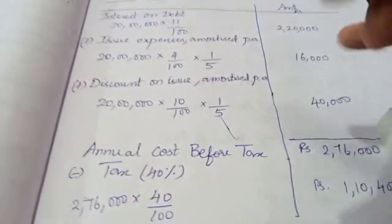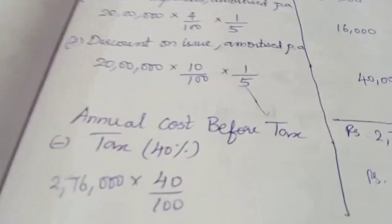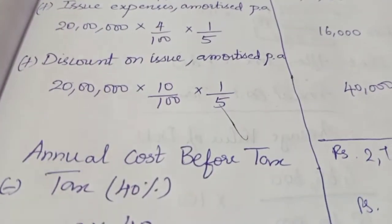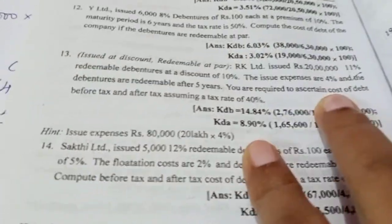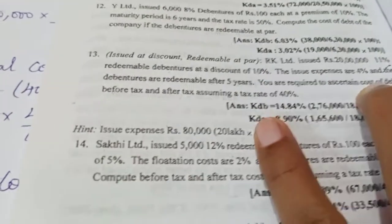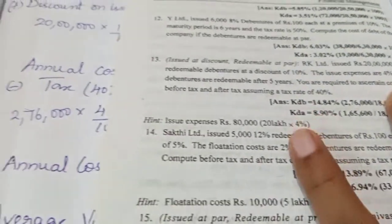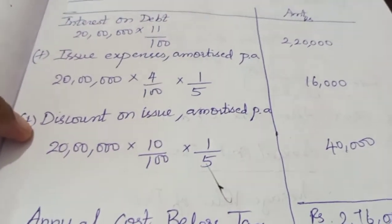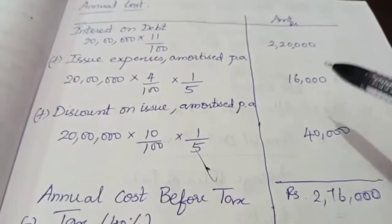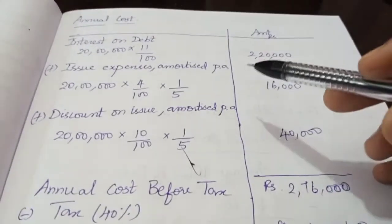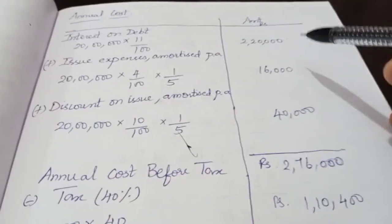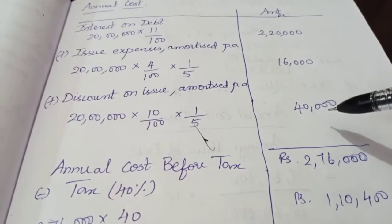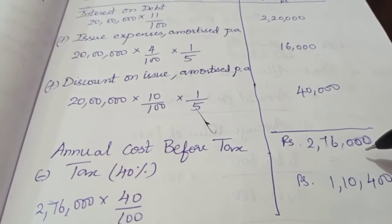We also need to add premium on redemption if mentioned. In this question, there is no premium on redemption to add. So the annual cost before tax is: interest on debt 2,20,000 plus issue expenses 16,000 plus discount on issue 40,000, giving a total of 2,76,000.